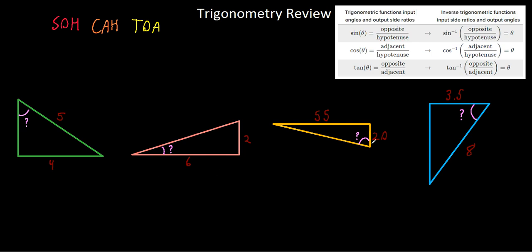Looking at each one of these examples, I can see that it's asking me to find the missing angles given just two sides.